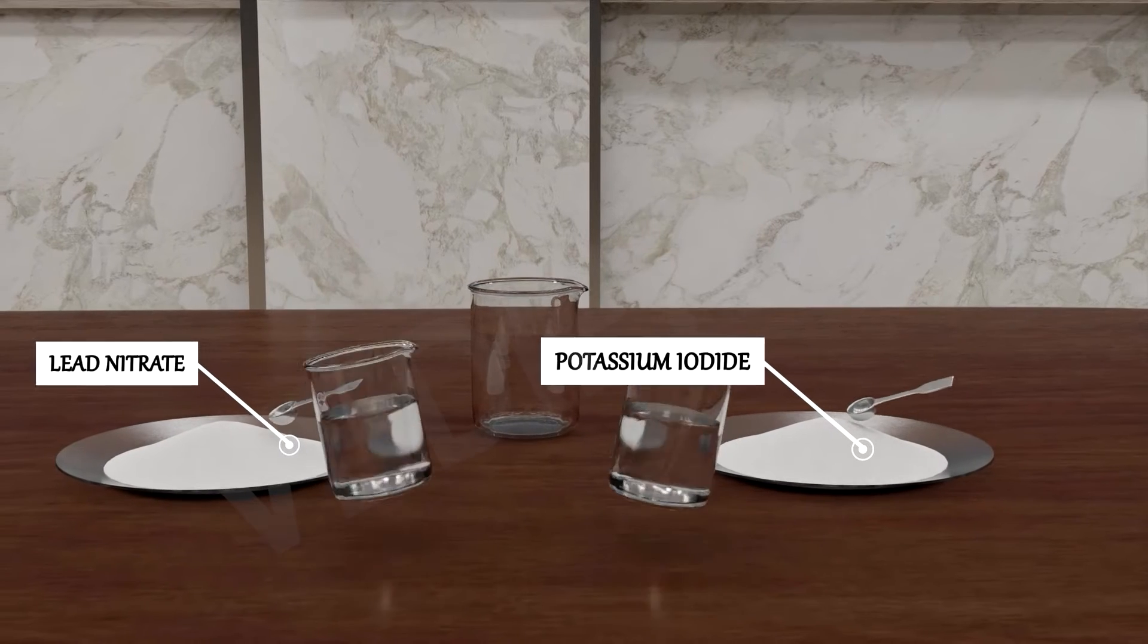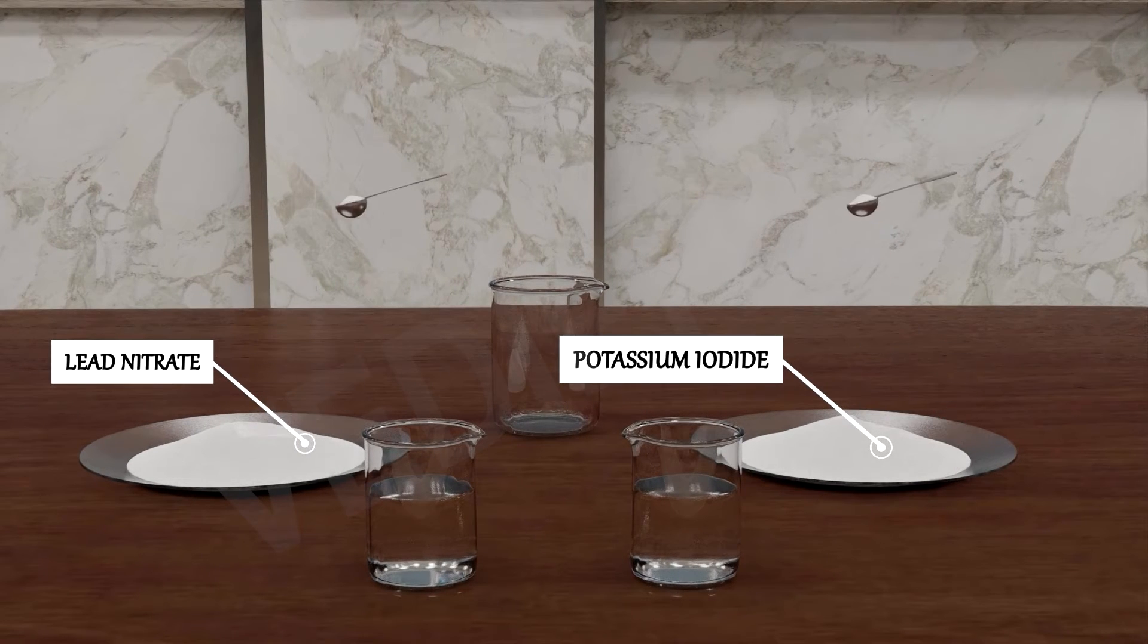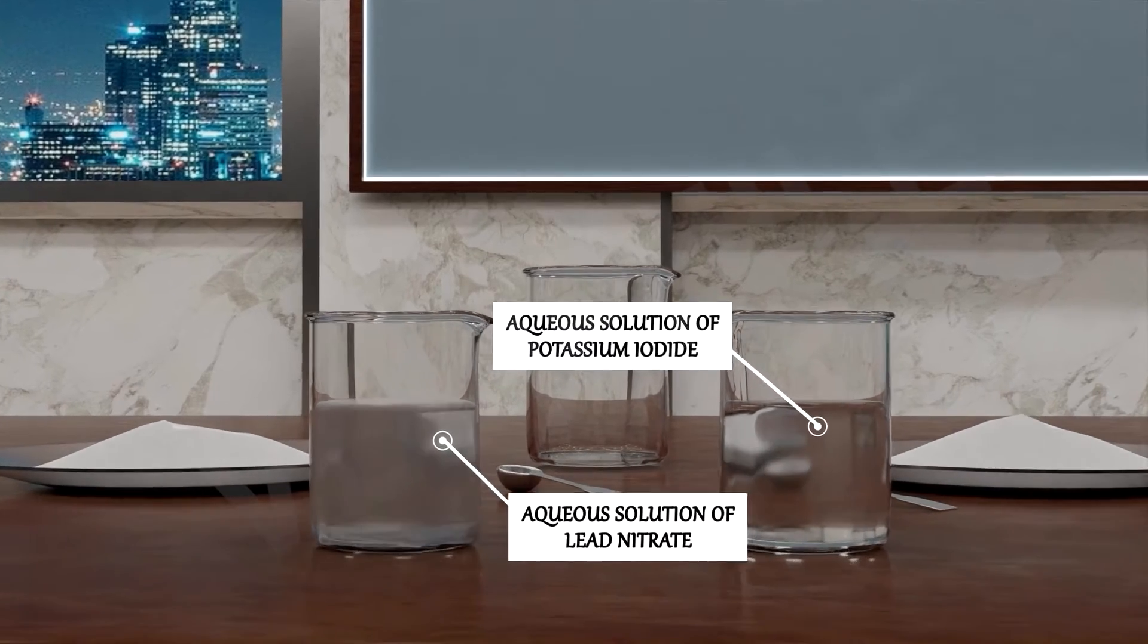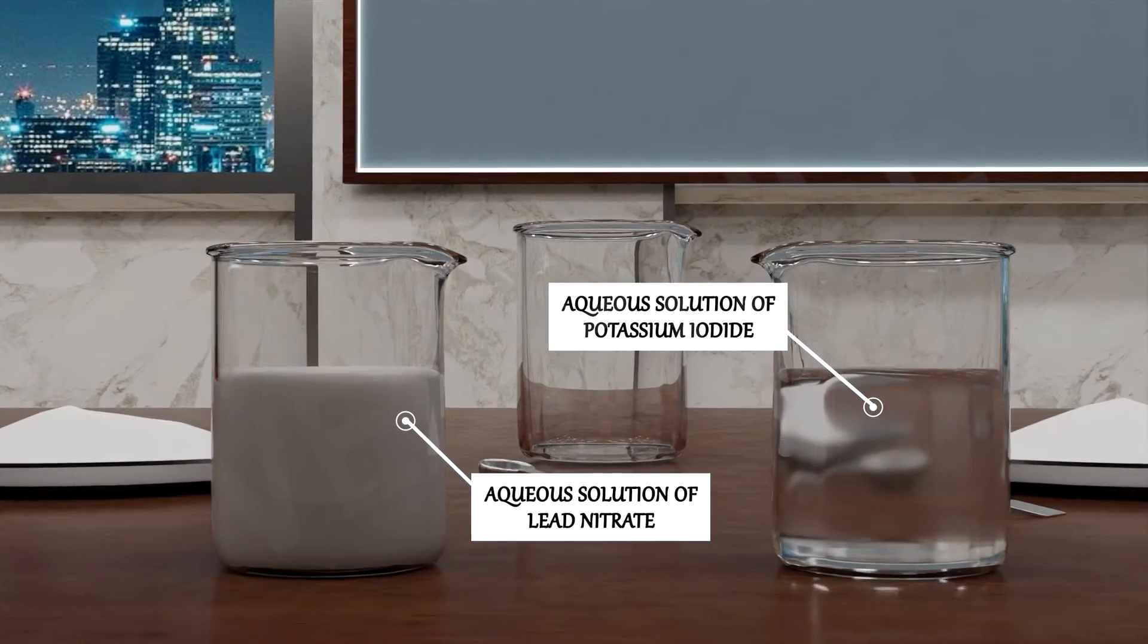Now we will dissolve both in water. So these are the aqueous solutions of lead nitrate and potassium iodide.